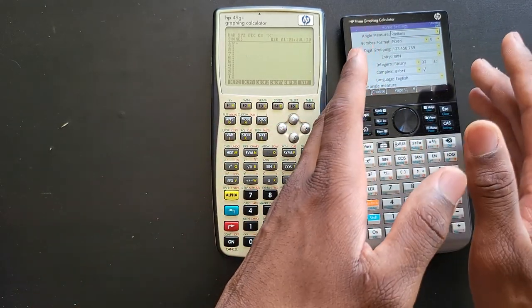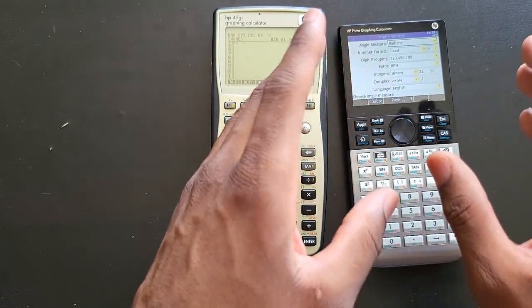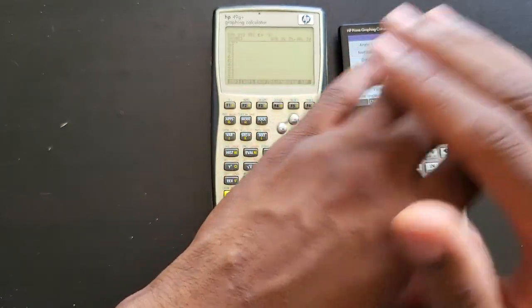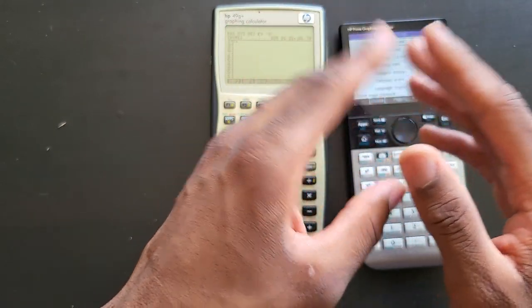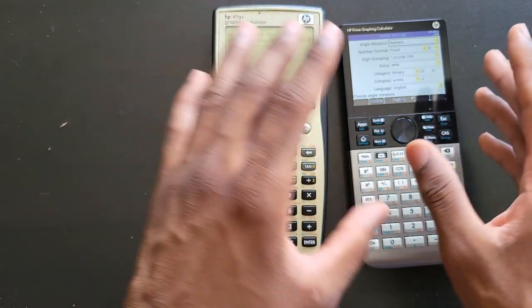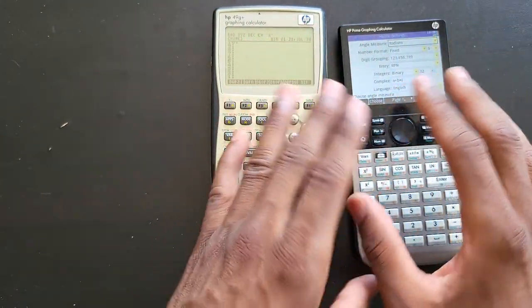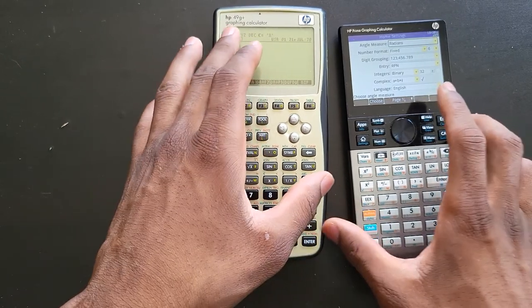The point is the fact that this is the latest calculator from HP and they advertise this calculator as being compatible with RPN - it's false advertisement. All these things HP are saying is just marketing. The RPN on this thing is literally trash, is garbage. Nothing compared to this 49G Plus that came out in 2003, about 20 years old.